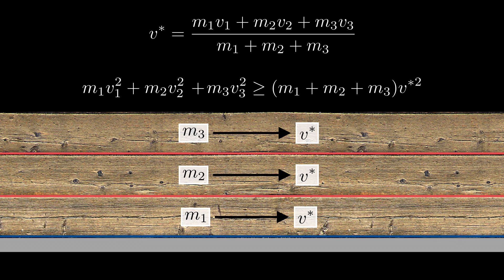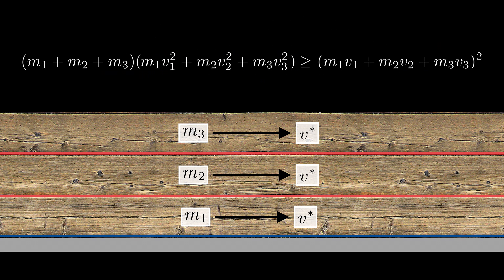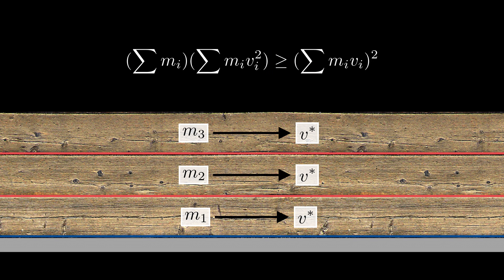We can substitute the final velocity into the inequality of our energies. Cleaning the terms, we will find that this expression is almost the Cauchy-Schwarz inequality. Let's write it down more concisely and rewrite m as a square and v as b over a. Then we recover the Cauchy-Schwarz inequality.